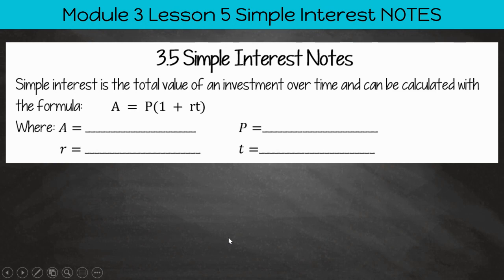All right. So Simple Interest is the total value of an investment over time and can be calculated with the formula A equals P multiplied by 1 plus RT. So that's great. But what do all these letters mean?